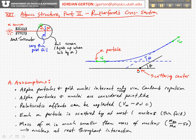This alpha particle is going to scatter off a nucleus. One of the assumptions we're going to make is that the only interaction between the alpha particle and the nucleus — the scattering center — is the repulsive Coulomb interaction. It's repulsive because we have a positively charged nucleus, and the alpha particle is also positively charged: two protons and two neutrons.